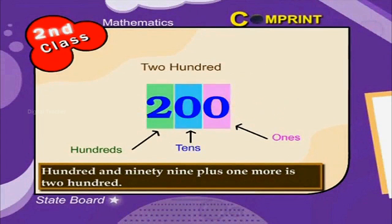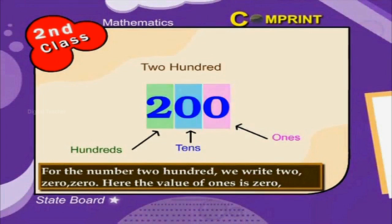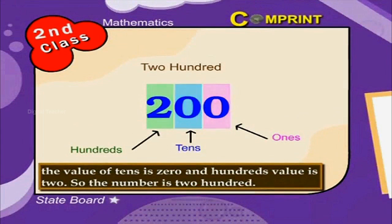For the number 200, we write 2, 0, 0. Here, the value of ones is 0, the value of tens is 0, and the hundreds value is 2. So the number is 200.